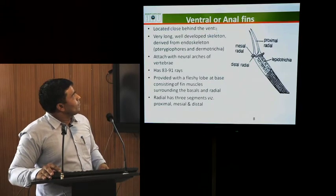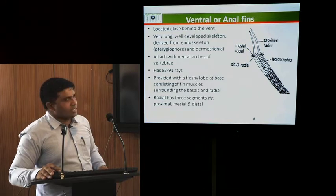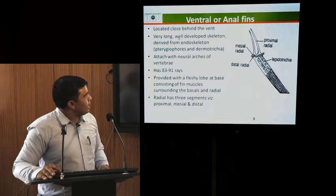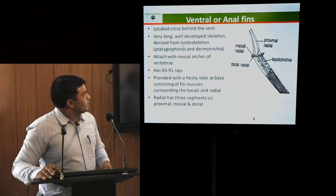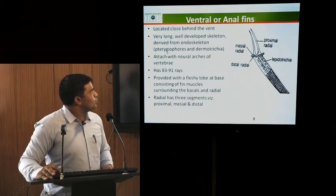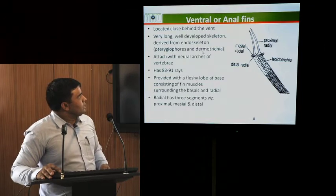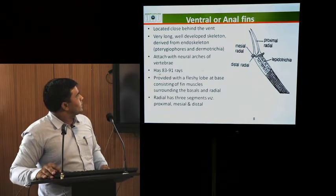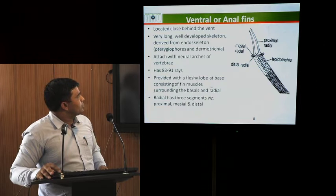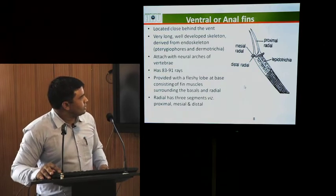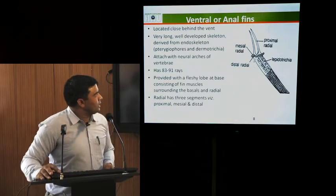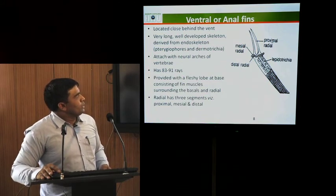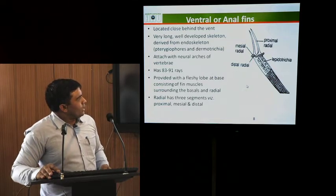Ventral or anal fins are located close behind the vent and are very long and well developed. They have a well-developed skeleton derived from the endoskeleton system. These consist of two portions: pterygiophores and dermotrichia. These attach with the neural arches of the vertebrae and the number of fin rays is 83 to 91. These are provided with a fleshy lobe at the base and consist of fin muscles. These are surrounded by basals and radials; the basals are present at the base and the radials are divided into three: proximal, mesial and distal. The lepidotrichia are long and help in swimming.